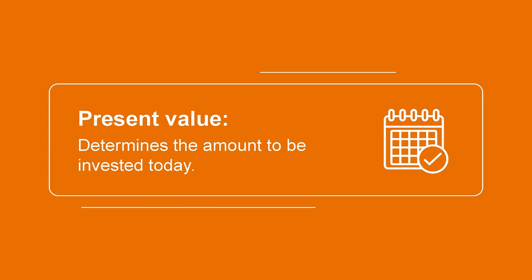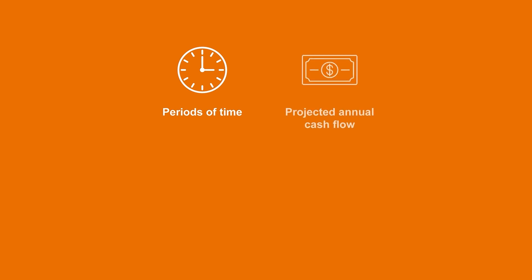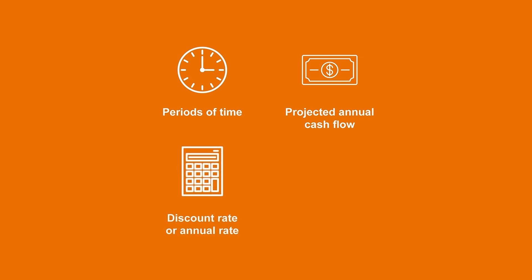Sometimes companies need to determine the amount to be invested today in order to produce a certain future value. This amount to be invested today is called the present value. This concept can also be extremely useful when a company knows their expected future cash flows from an investment and wants to discount these cash flows back to today's dollars in order to evaluate whether the investment makes sense today. When making these types of investment decisions, companies need to take into account factors such as the length of time of the investment, the projected net annual cash flows, the desired rate of return or discount rate, and the salvage value.